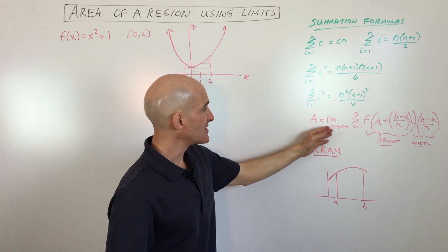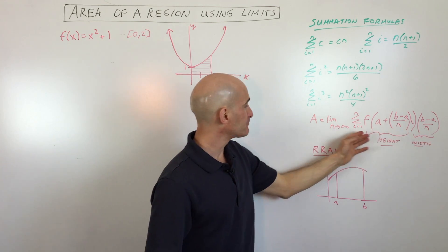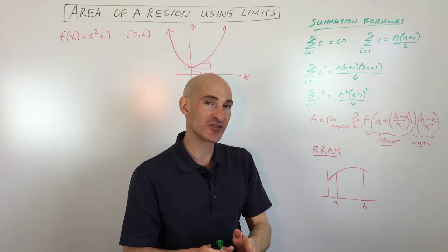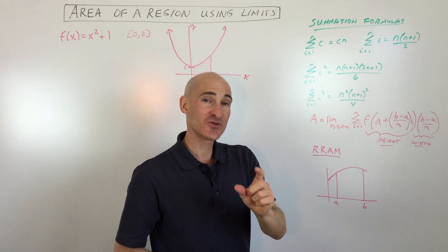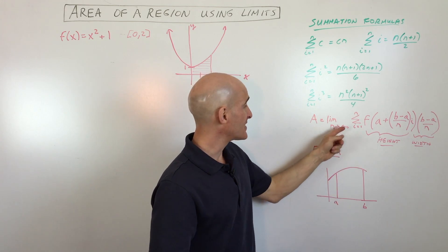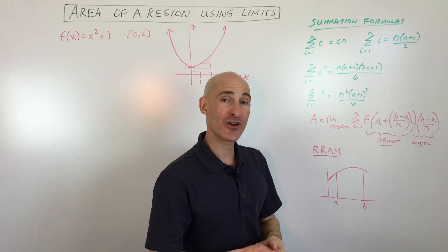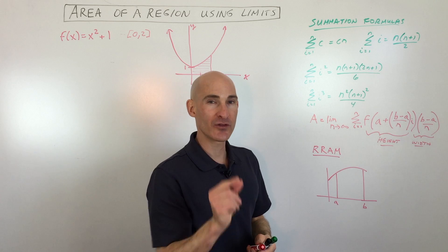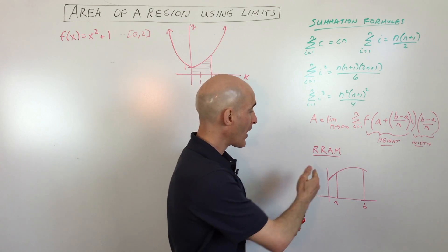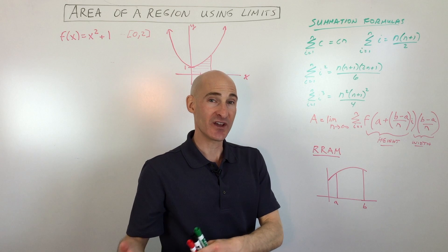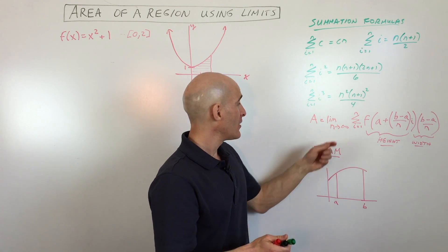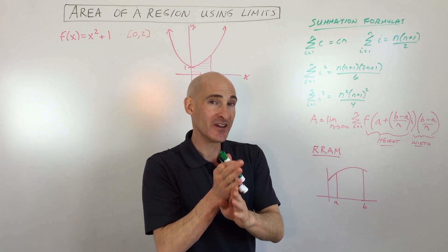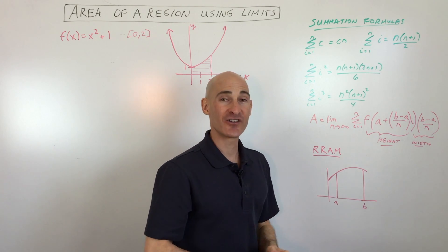The next thing we're going to look at is this area formula over here on the right. In order to find the area, we're going to subdivide a region into rectangles. By finding the area of each one of those rectangles and then summing them — adding them all up — we can find the area of a region. The smaller and thinner the rectangles are, the more accurate the area estimation becomes. Until you take the limit to infinity, meaning the rectangles are infinitely thin, you're going to get the exact area underneath the curve.